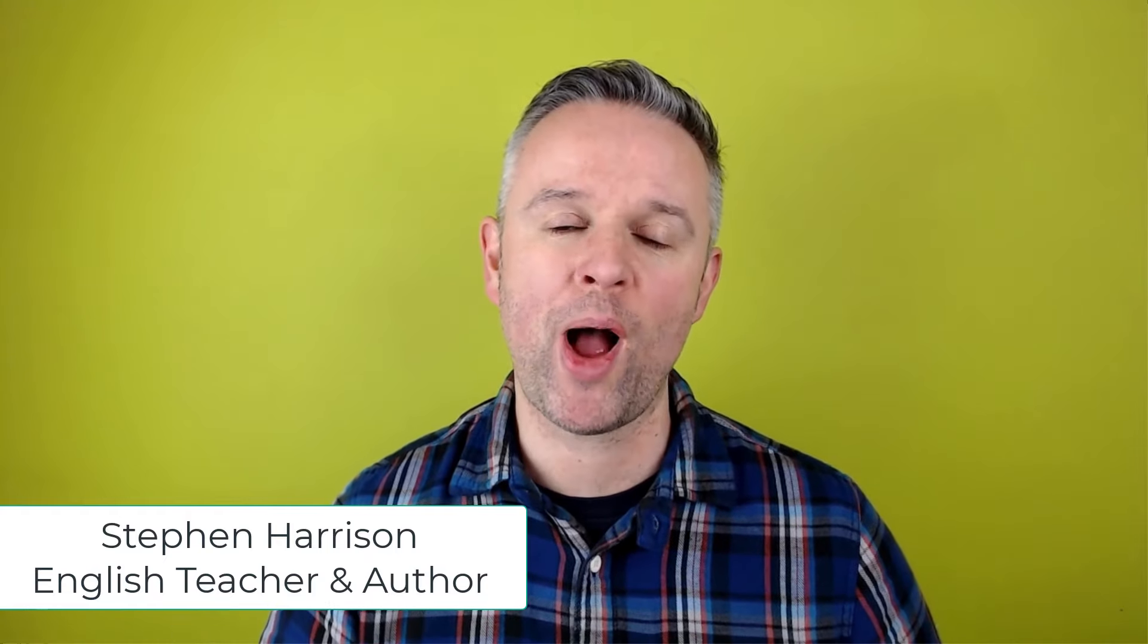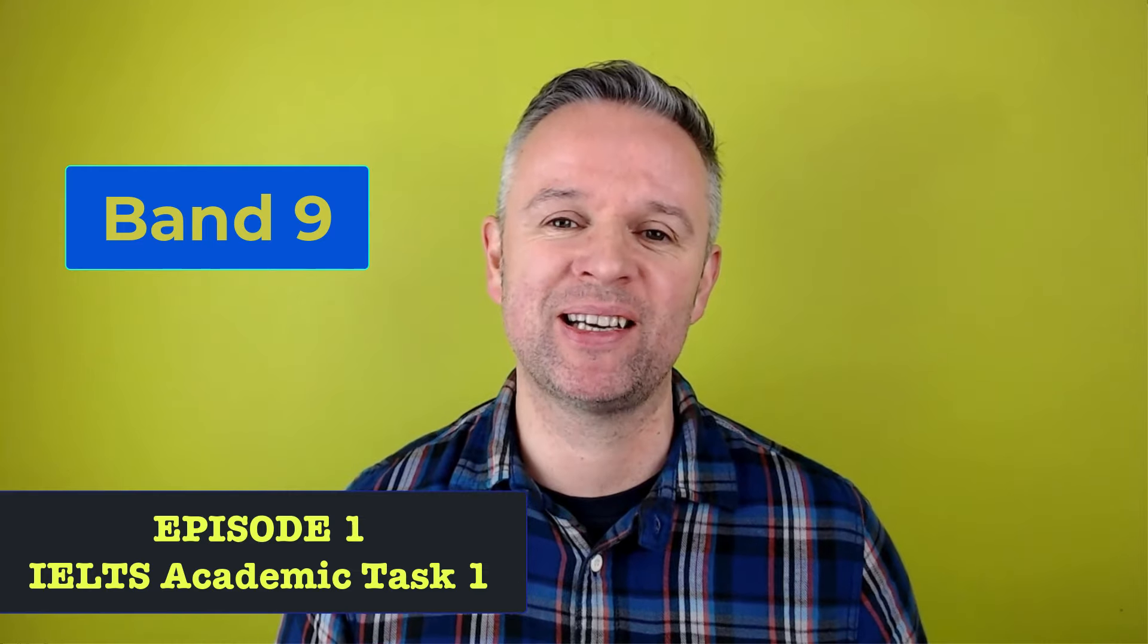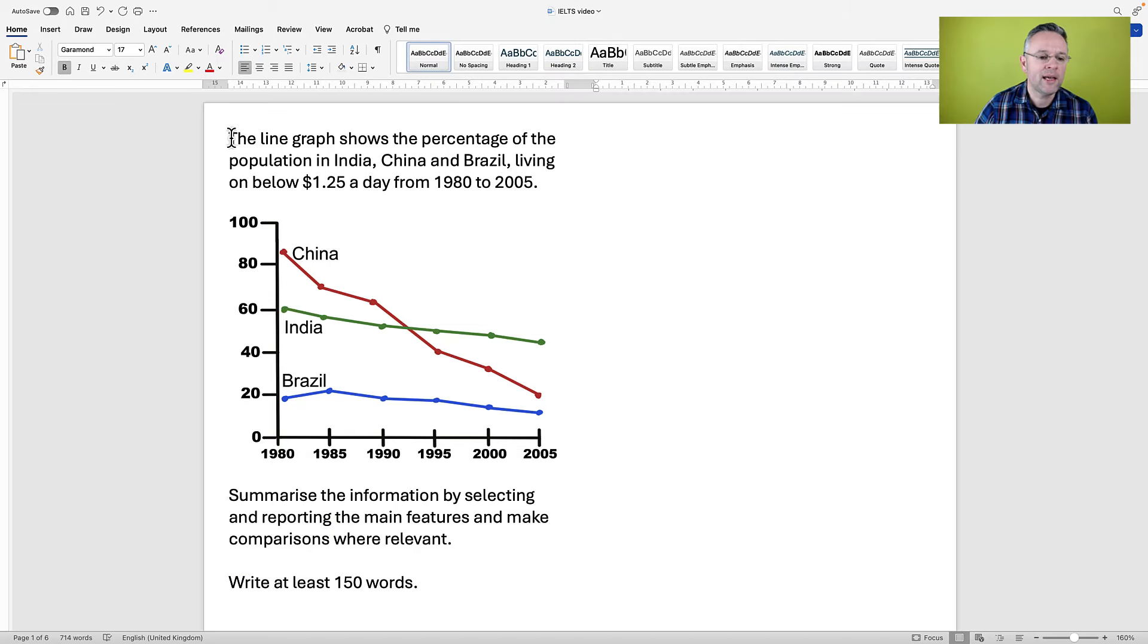In this video, I'm going to show you how to get a Band 9 in the IELTS Academic Writing Test, Task 1. Let's begin. Here we have our question. The line graph shows the percentage of the population in India, China and Brazil living on below $1.25 a day from 1980 to 2005. Summarise the information by selecting and reporting the main features and make comparisons where relevant. Write at least 150 words.